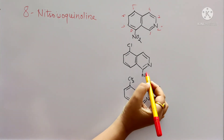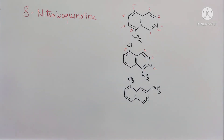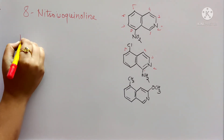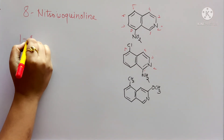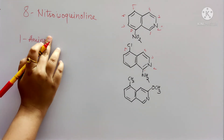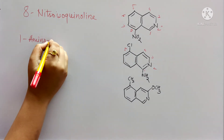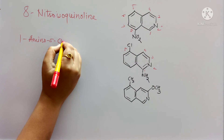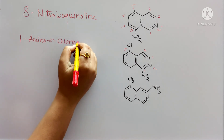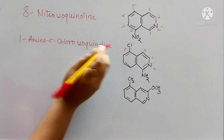Give numbering: 1, 2, 3, 4, 5. To the 1st position amino group is attached, and to the 5th position chlorine is attached. Alphabetically, amino group comes first, so it will be 1-amino, next 5-chloroisoquinoline.